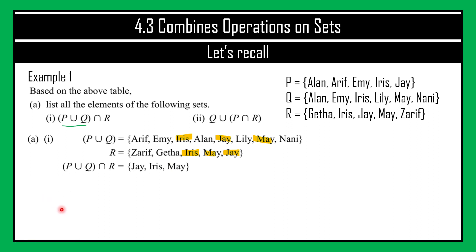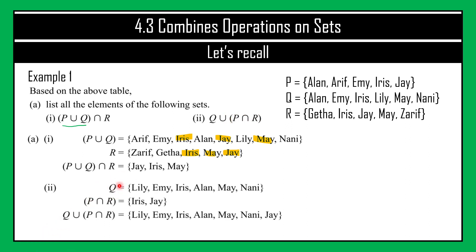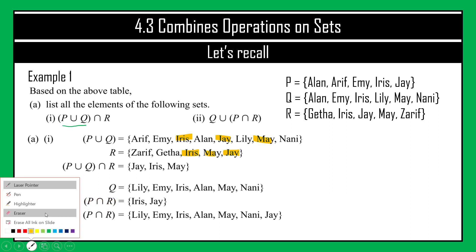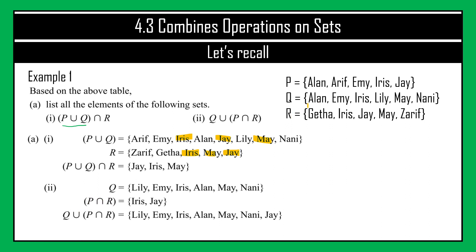For question A number 2, the expression is Q union (P intersect R). Always answer the bracket first. For P intersect R, we take only elements common to both P and R. P has Arif, Amy, Iris, Alan, Jay; R has Zarif, Gita, Iris, May, Jay. Intersect means only the same — so P intersect R gives Iris and Jay.